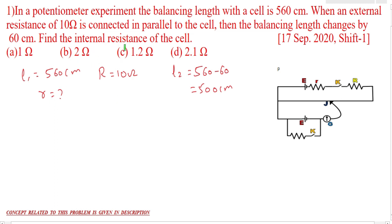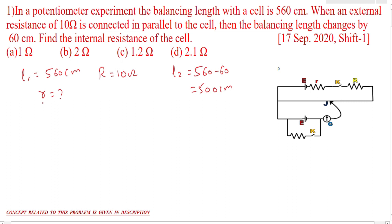We have to calculate the internal resistance. The value of the external resistance connected in the secondary circuit is 10 ohm. The formula for internal resistance in the case of a potentiometer is: small r equals capital R into (L1 minus L2) by L2.